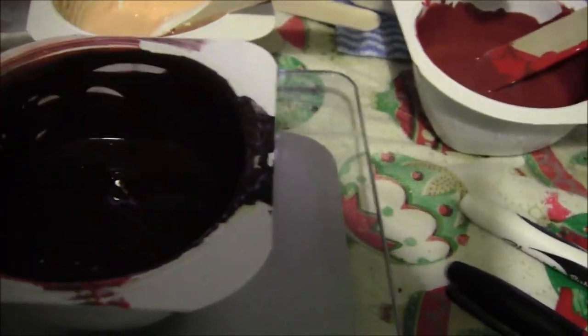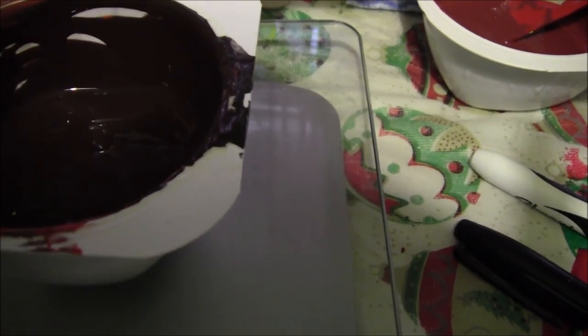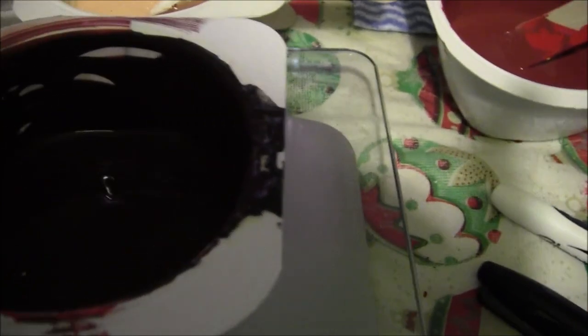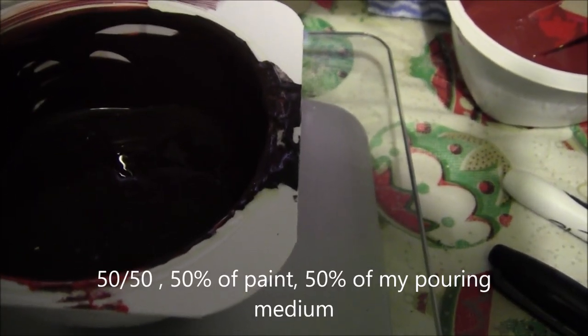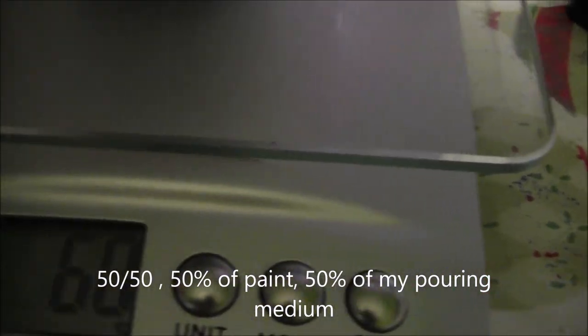So how do I mix my pouring medium? If you have watched my other video, you will know how I make my own. What I like to do is a 50-50 of pouring medium and 50 of the paint. So I have measured up these and I found out that, minus the weight of the container, it means that I have to see here 94 grams. When I have 94 grams, I know that I have to stop. So let's do that.